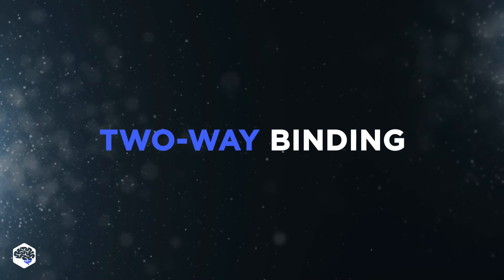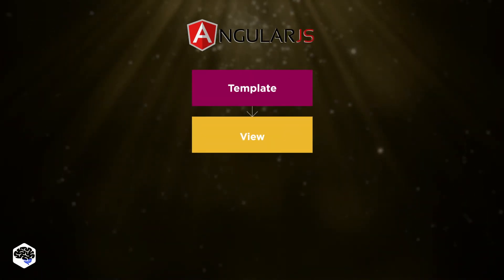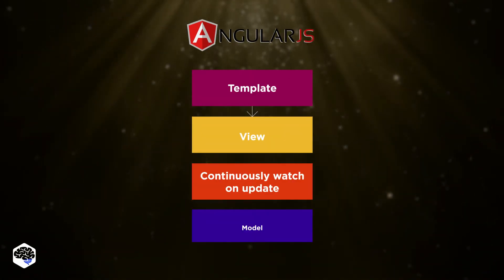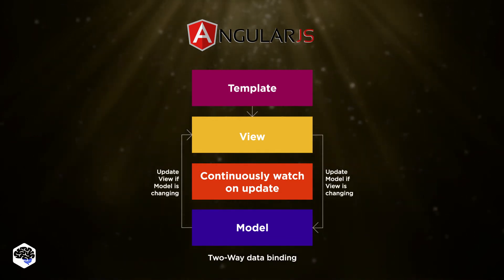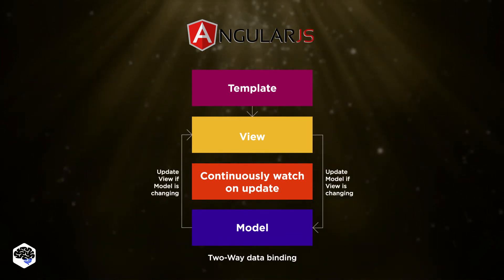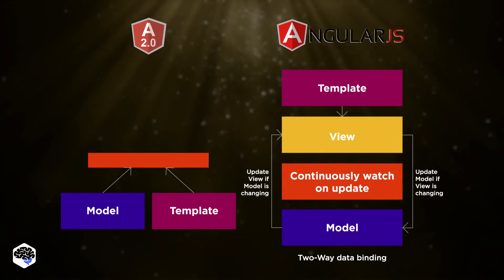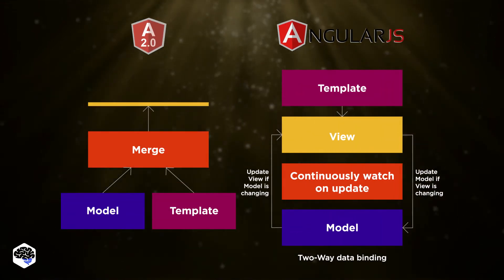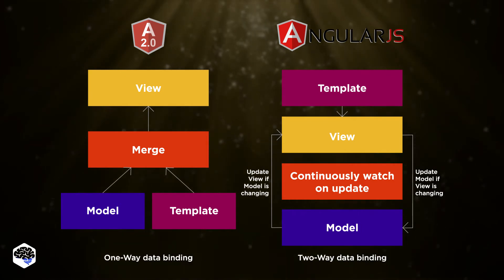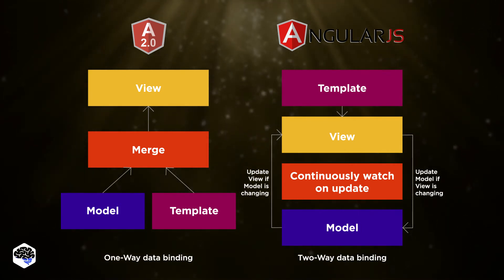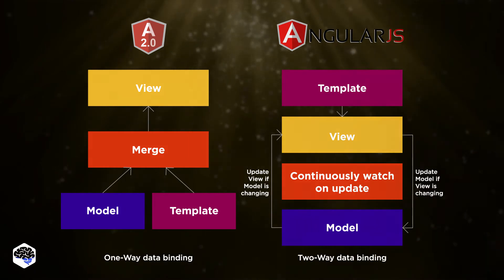Two-way binding: AngularJS has the possibility to automatically update the application view in regards to changes in its state — this process is also known as two-way binding. Angular 2 changed its binding logic; you now need to create the directives manually. Yet the one-way binding allows working with a more organized and better isolated code base.